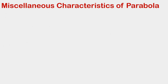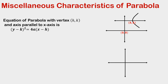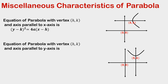For a parabola whose axis is parallel to the x-axis and has vertex (h, k), the equation is (y - k)² = 4a(x - h). If the axis is parallel to the y-axis with vertex (h, k), the equation is (x - h)² = 4a(y - k). Note that a second-degree polynomial, i.e., a quadratic equation, also represents a parabola.